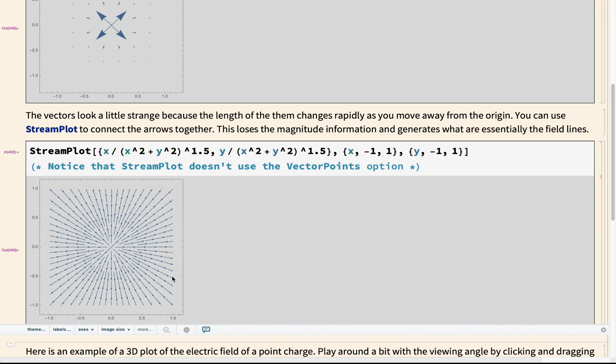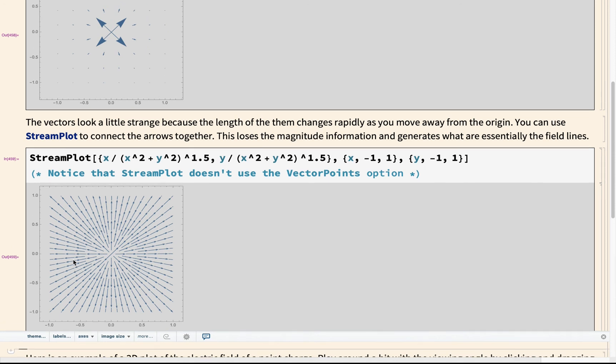There is a way to overlay this type of plot on top of a contour or density plot. And that's a good way to combine a graph that shows both direction and the magnitude in a way that's easier to see than this plot.